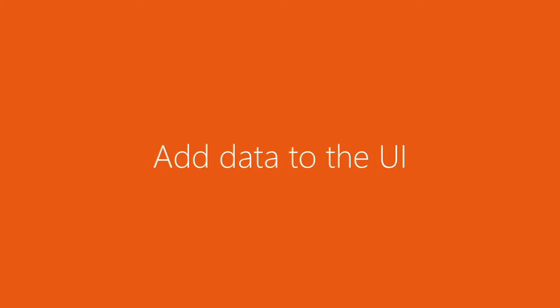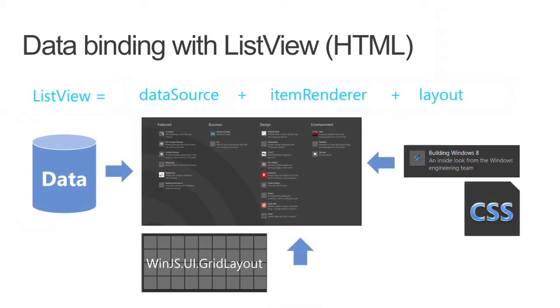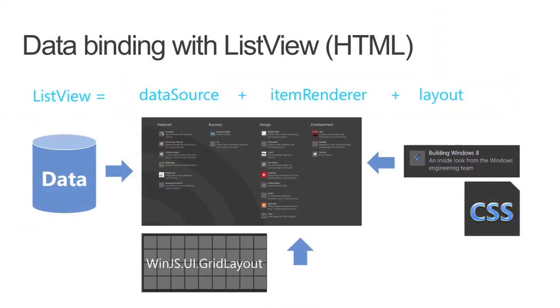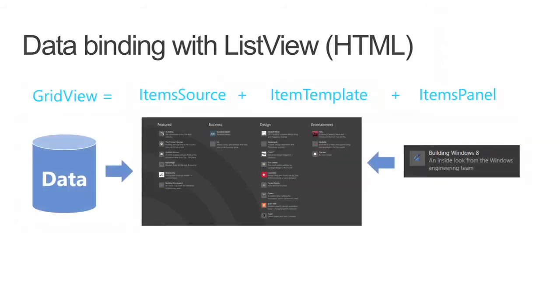Add data to the UI. Most apps display lists of data such as stock prices, news headlines, images in a gallery, or the contents of a shopping cart. These lists might get their data from a database, the web, or a JSON data source. The easiest way to display that data in UI controls is to apply familiar data binding techniques in the supported languages. Data binding gives your app a simple way to display and interact with data from various sources. When the binding is established and the data changes, the UI elements that are bound to the data can display these changes automatically.